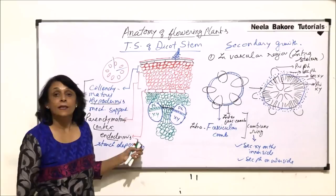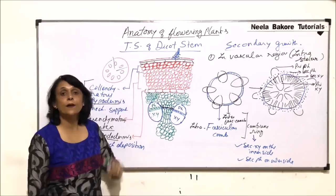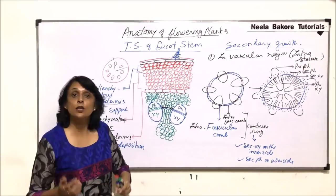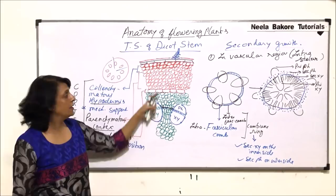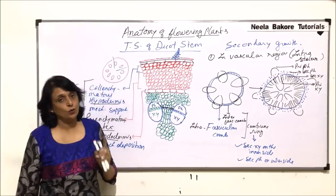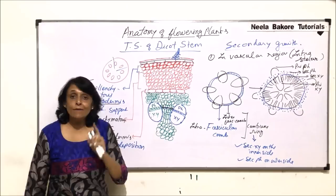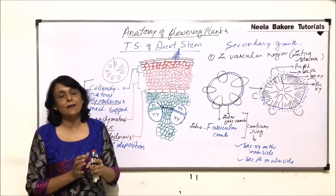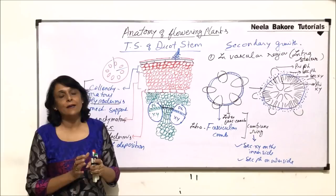The second place where secondary growth takes place is in the cortex region. We can call it secondary growth in the cortical region, or since the stellar region is everything inner to the endodermis, this region outside the stele is called extrastellar secondary growth. In the next part we will take up this extrastellar secondary growth. Though one type occurs in the inner part and the other in the outer part, both intrastellar and extrastellar secondary growth ultimately result in an increase in girth.